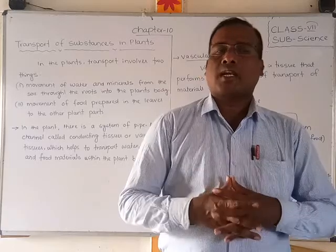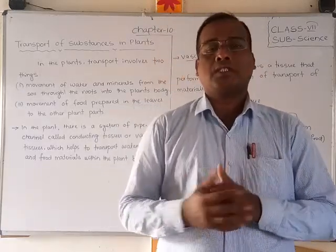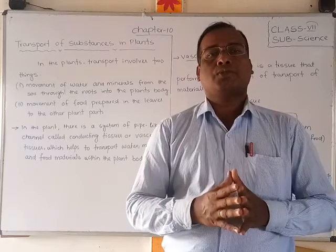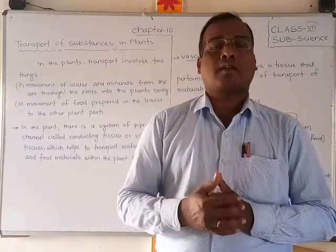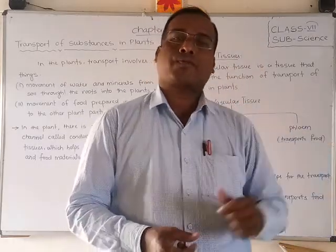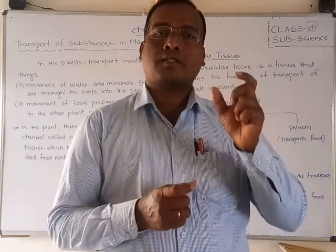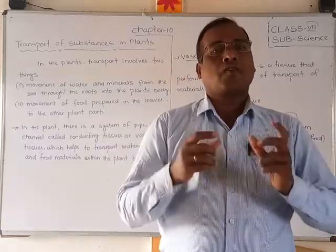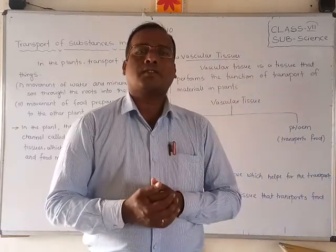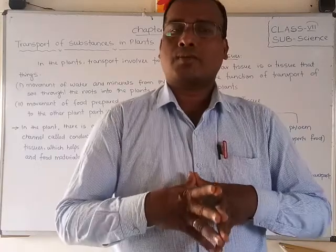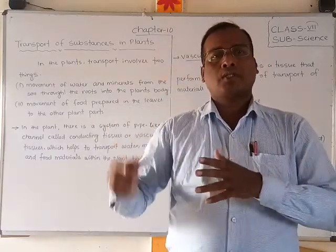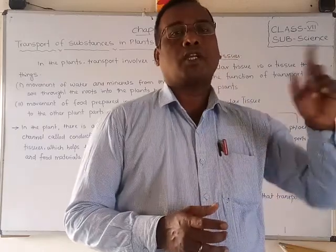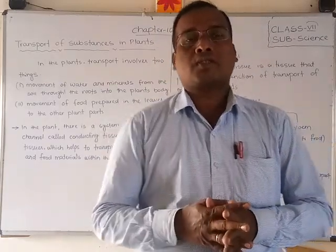Vascular tissue is generally of two types: one is xylem and another one is phloem. Xylem is the vascular tissue which helps in the transport of water and minerals from the roots to the leaves. Phloem is also one type of vascular tissue which helps to carry food to the different parts of the plants.